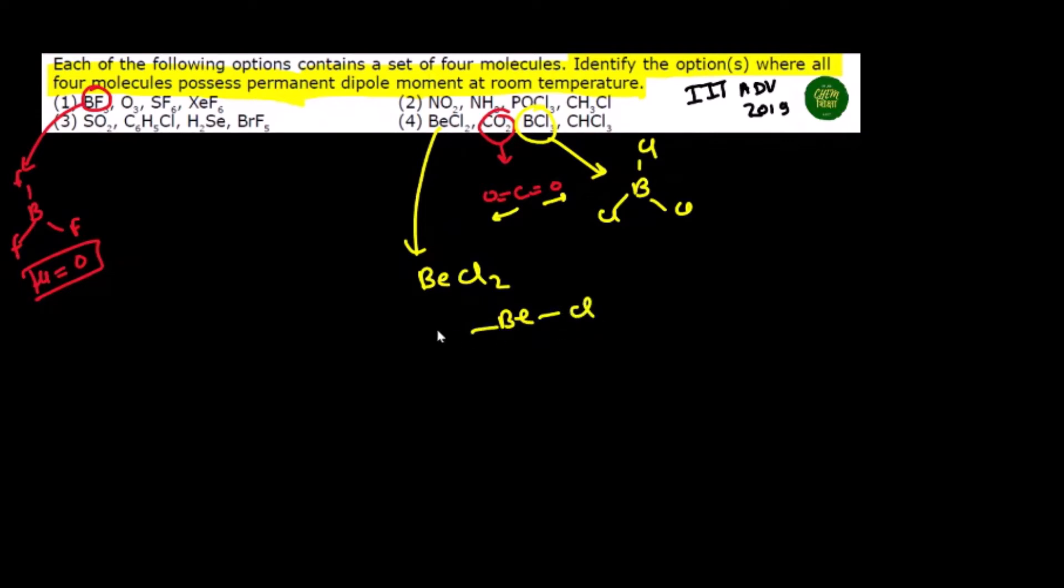If you have BF3, this molecule is trigonal planar, and since it's a symmetrical molecule, the dipole moment cancels out to zero. Similarly, CO2 needs to be checked. CO2 is linear, which means the dipole moments will cancel out.